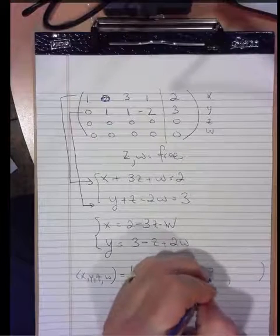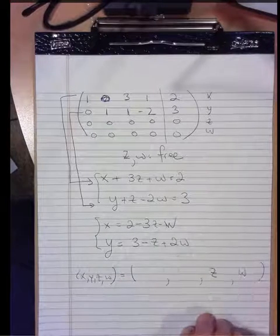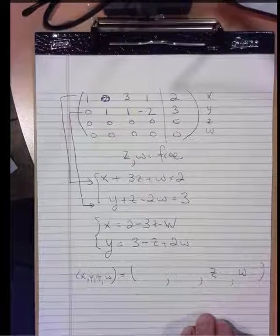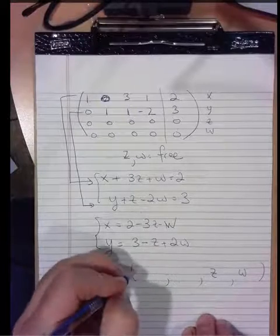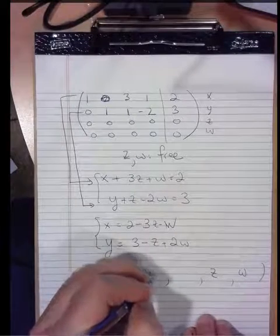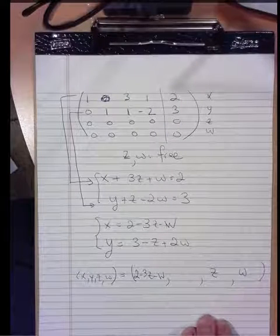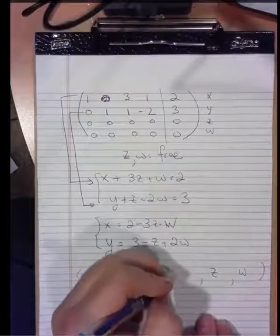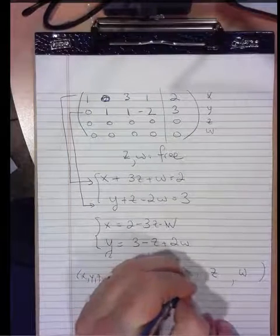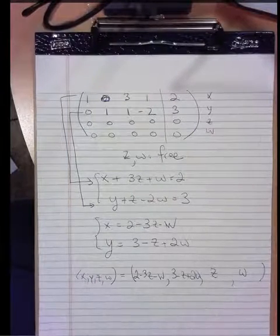Z and w are known to be free parameters, meaning that z and w get to just be z and w. But once we provide values for z and w, then the x-coordinate is pinned to 2 minus 3z minus w. The y-coordinate is pinned to 3 minus z plus 2w. Like that.